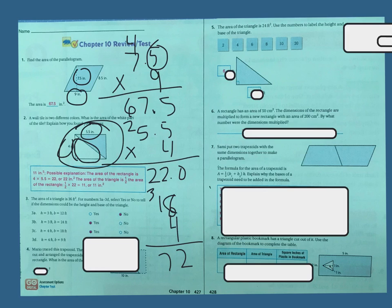The next one is 4 feet height and 9 feet base. 4 times 9 is 36, and half of 36 is not going to be 36. So the answer to that is no.